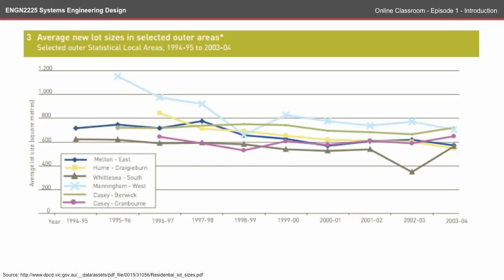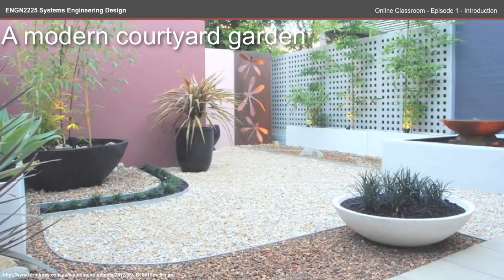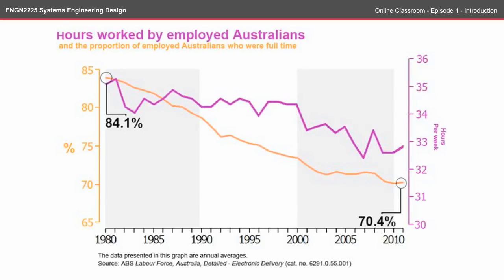The average block size is generally staying the same or getting a little smaller. However, houses are getting bigger and taking up more of the land. This means that families generally have less lawn to mow, with modern landscape architects favouring hard surfaces ahead of grass.